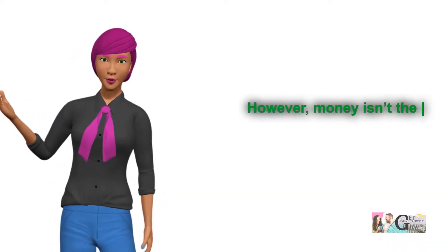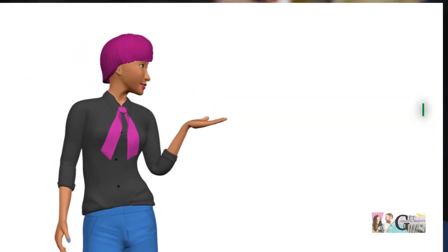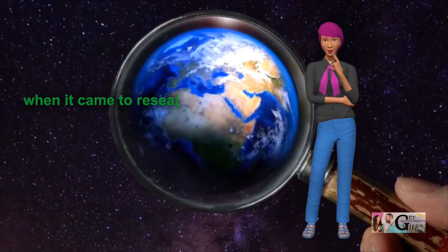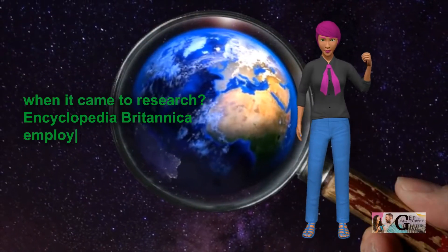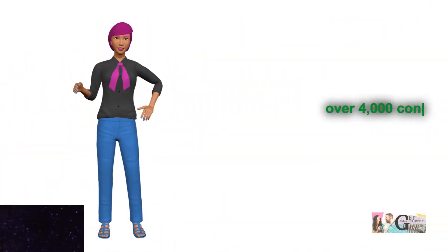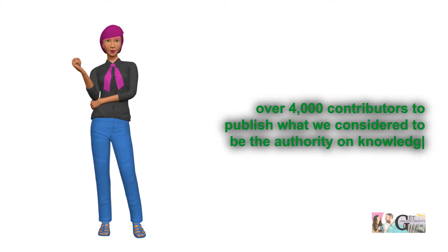However, money isn't the only place where decentralization can play a role. Do you remember those big encyclopedia books we used to rely on when it came to research? Encyclopedia Britannica employed a hundred full-time editors and over 4,000 contributors to publish what we considered to be the authority on knowledge.